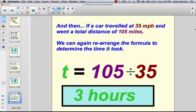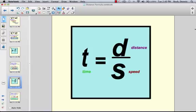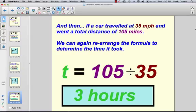So then another example could be if your car traveled at 35 miles per hour and went a total distance of 105 miles, then rearranging the formula again in such a fashion where your time is equal to your distance divided by your speed, you could take the 105 miles divided by the 35 miles per hour and that would come out to be three hours of travel time.